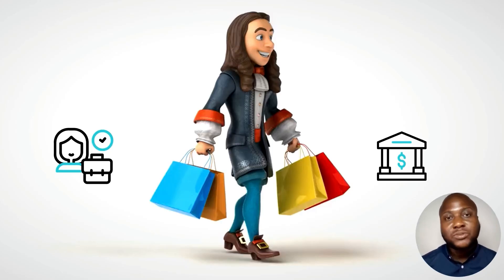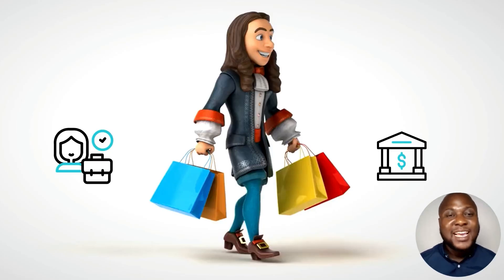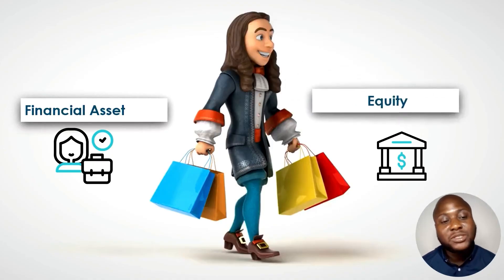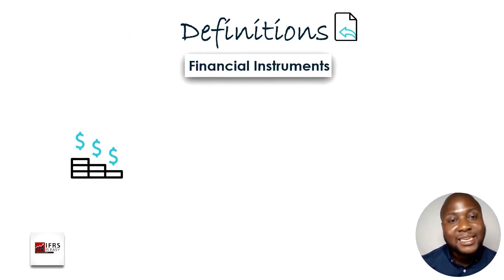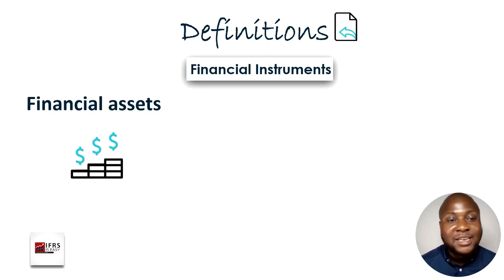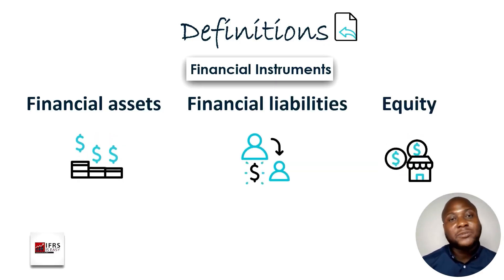At every point in time when you have a financial instrument, there must be a contract with at least two parties involved. One party is favored — they hold a financial asset — while the other holds a financial liability or equity. That is the crux of our discussion going forward. Now let's take the definitions one after the other. We've talked about financial instruments, and now we look at the three types: financial assets, financial liabilities, and equity.